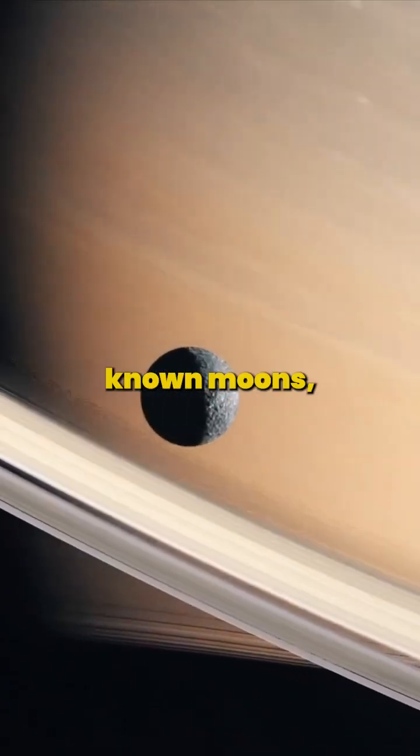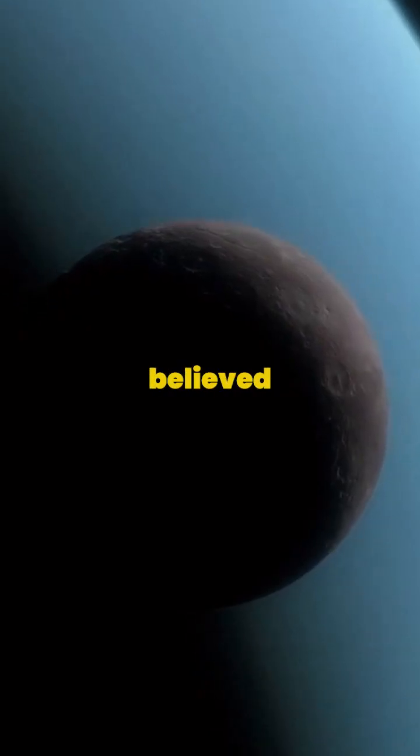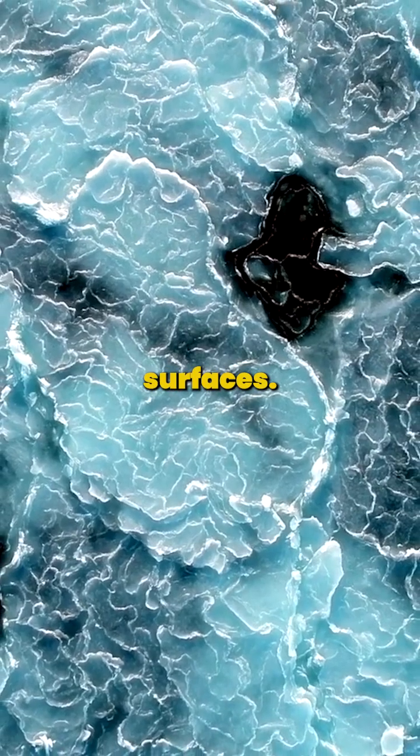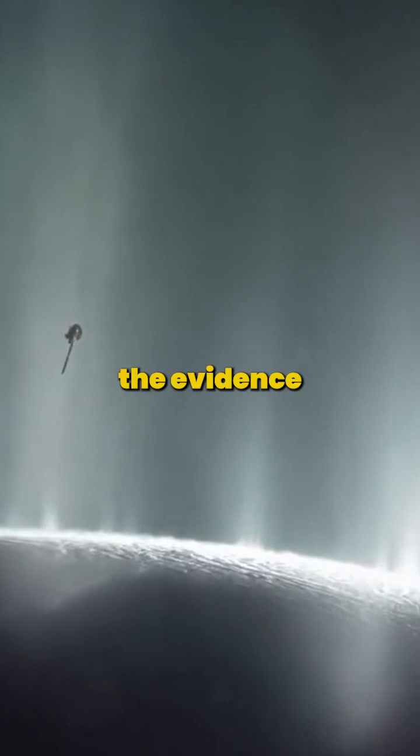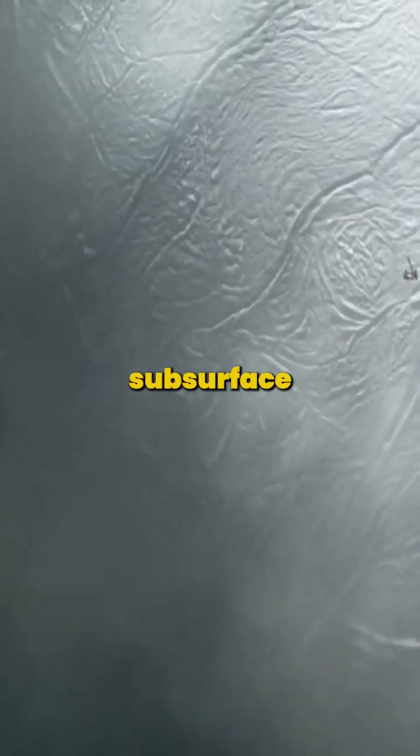Uranus has at least 27 known moons, some of which are believed to have oceans beneath their icy surfaces. Two of these moons, Miranda and Ariel, are particularly interesting due to the evidence suggesting the presence of subsurface oceans.